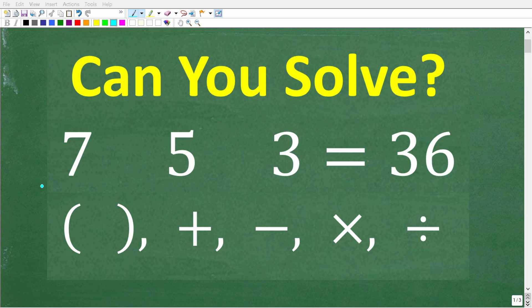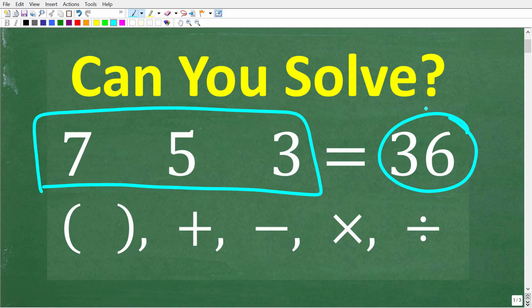Can you figure out how to make all these numbers right here equal to 36? Well, here is the challenge. We have 7, 5, and 3, and you get to use any combination of these symbols right here.